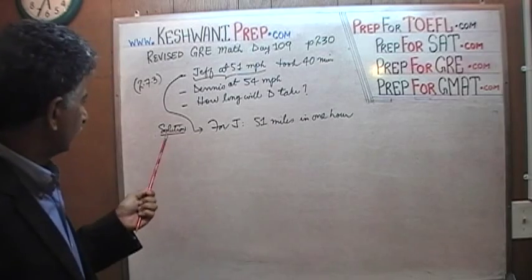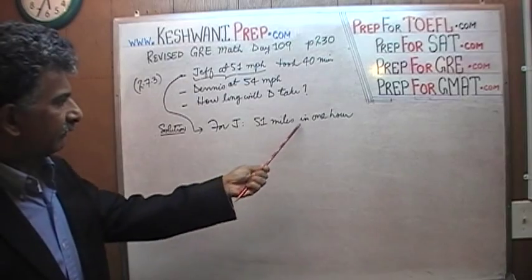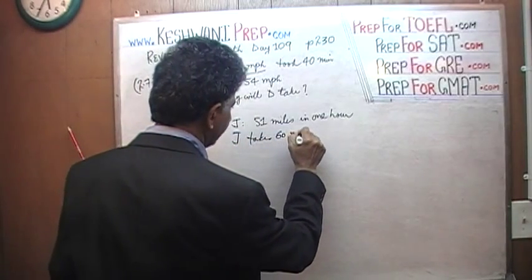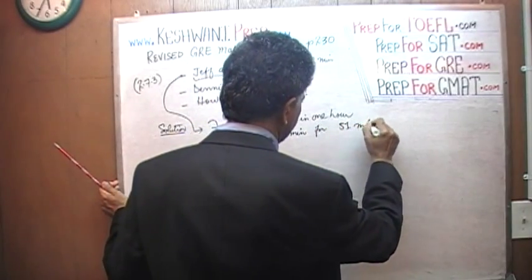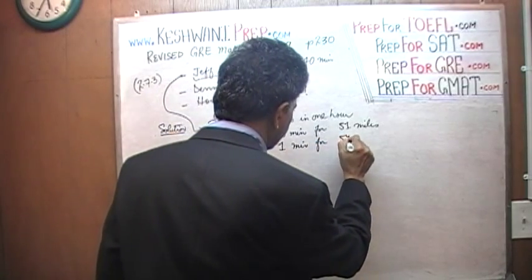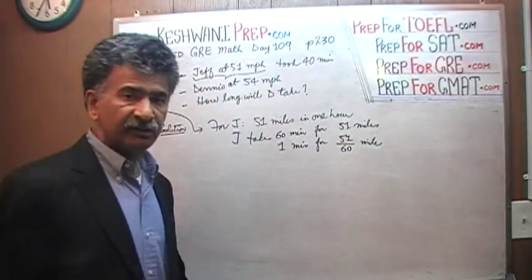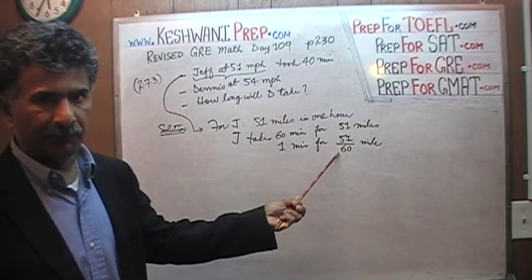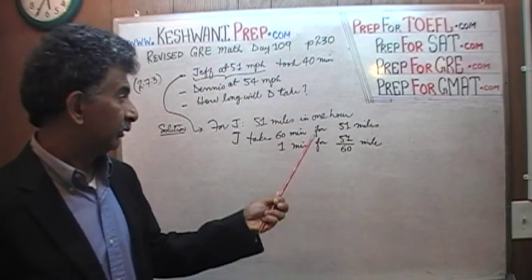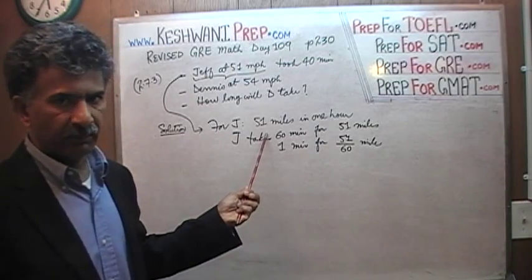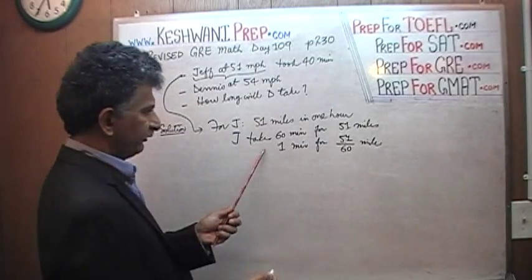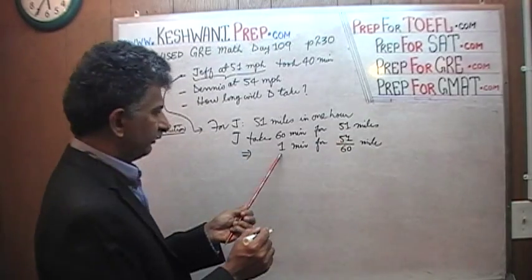That's what it is, so let's get going. Here is the solution. We know that Jeff drives 51 miles in one hour, which is the same as saying Jeff takes 60 minutes for 51 miles. If he takes 60 minutes to go 51 miles, he must take one minute for 1/60th of that amount — 51 over 60. As you can see, 51 over 60 is less than one, which makes sense because in one minute he is going less than one mile. If he were going one mile per minute, his speed would be 60 miles per hour, but he's only going 51. So Jeff takes 60 minutes to go 51 miles, which implies he takes one minute for 51/60.